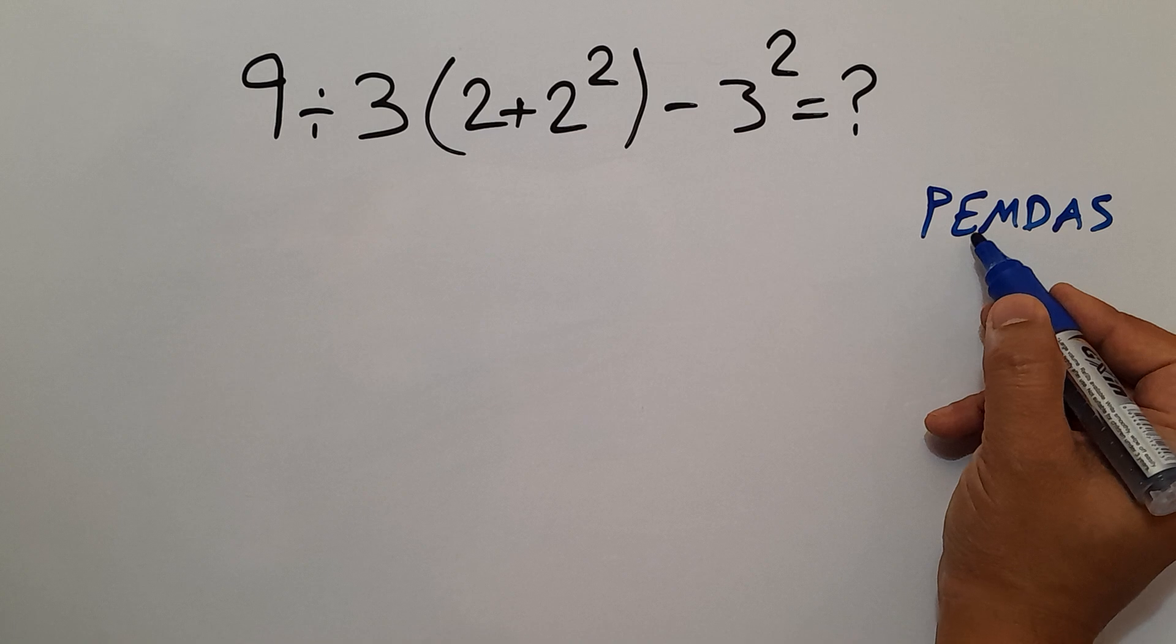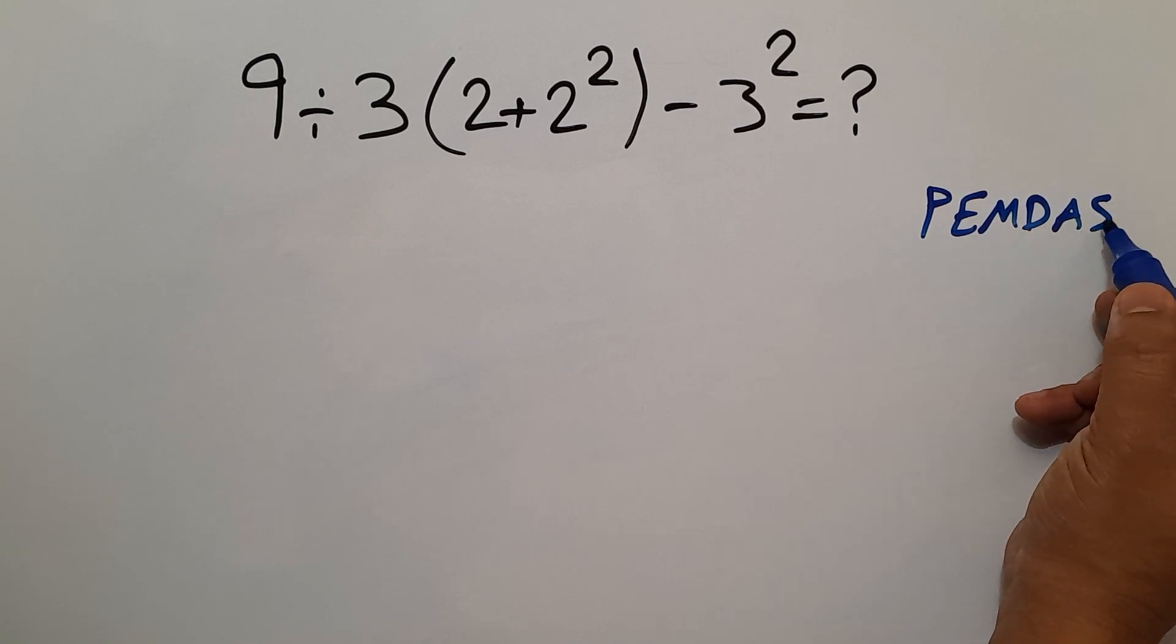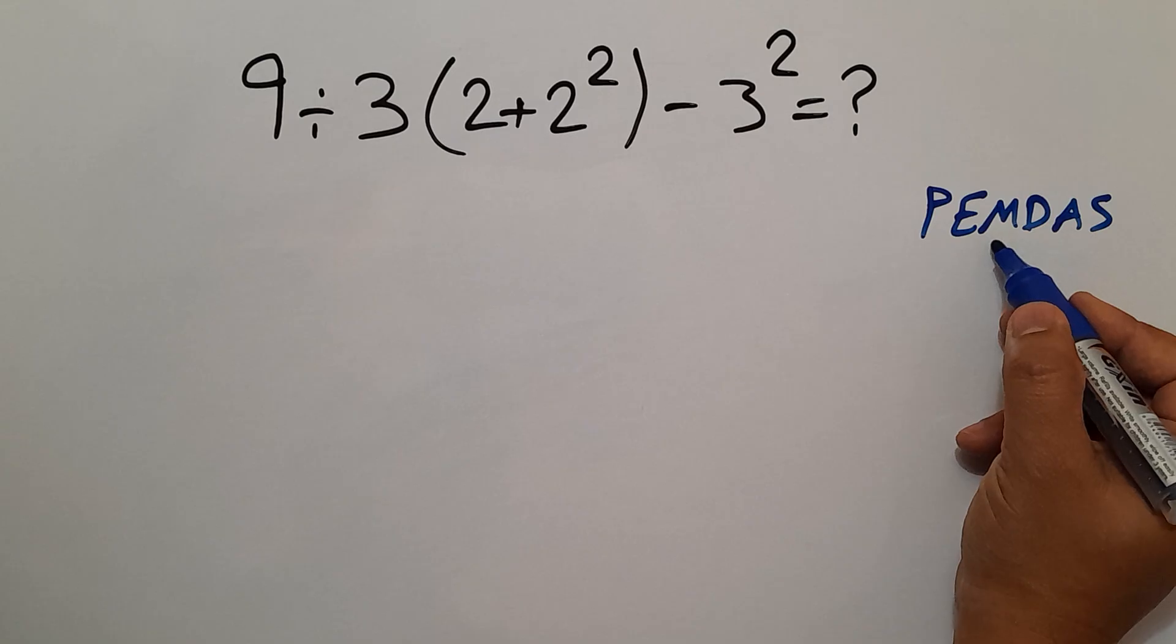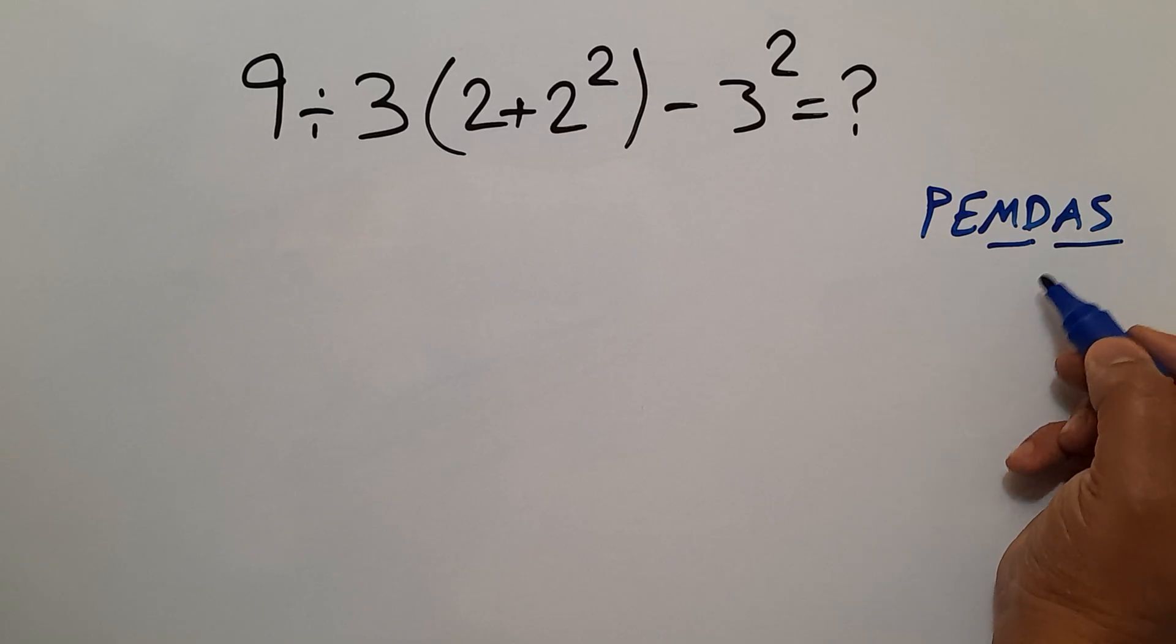We first do parentheses, then exponents, then multiplication and division, and finally addition and subtraction. Remember that multiplication and division have equal priority, and we have to work from left to right. And the same applies to addition and subtraction.